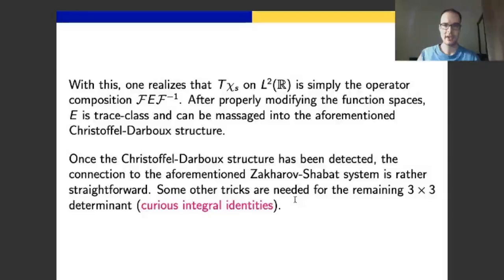Once you do the computation, you realize that the product, operator composition more precisely, of T and χ_s, where χ_s multiplies by characteristic function of interval s to plus infinity, this composition is actually operator composition Fourier transform, some trace class operator E, inverse Fourier transform. And this is nice because the operator determinant is invariant under the unitary conjugation of the Fourier transform.